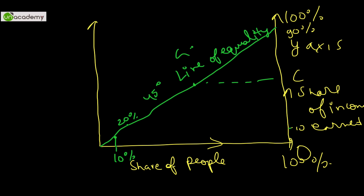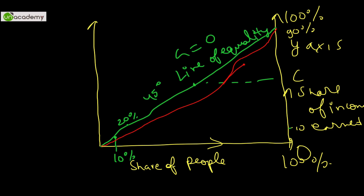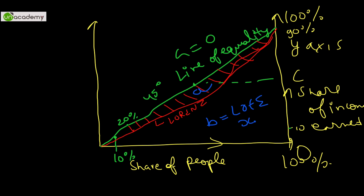Now drawing a typical Lorenz Curve for a country, it bows below the Line of Equality. The area between the Line of Equality and the Lorenz Curve is called 'A'. The area between the Lorenz Curve and the X-axis is 'B'. The Gini Coefficient is calculated as A divided by (A + B). This diagram is extremely important — it clearly shows how the Gini Coefficient is derived from the Lorenz Curve.